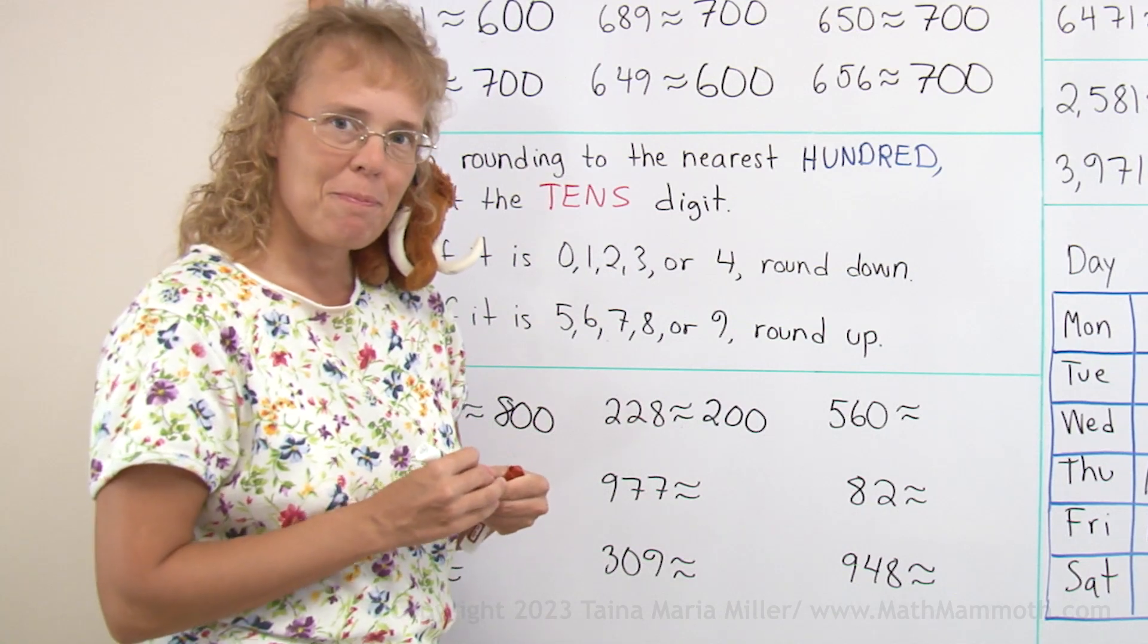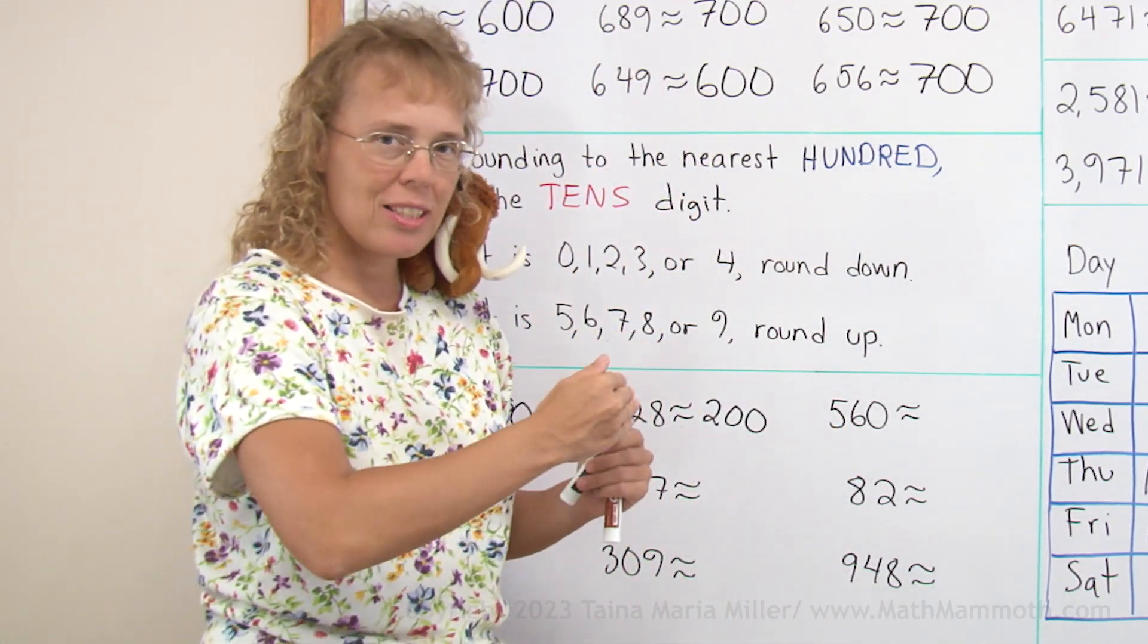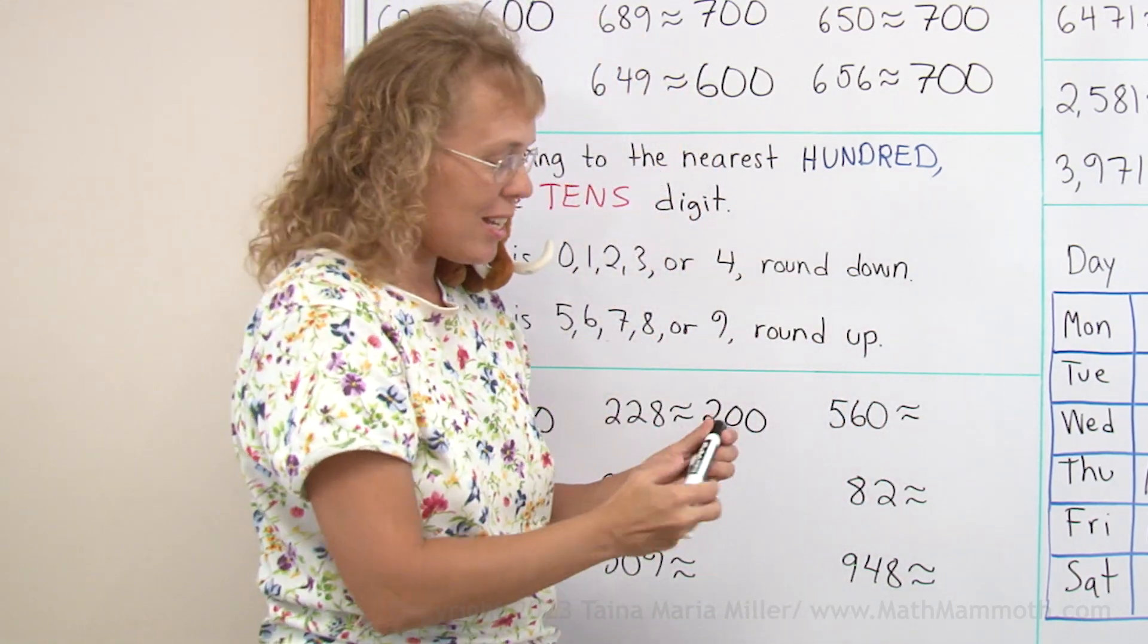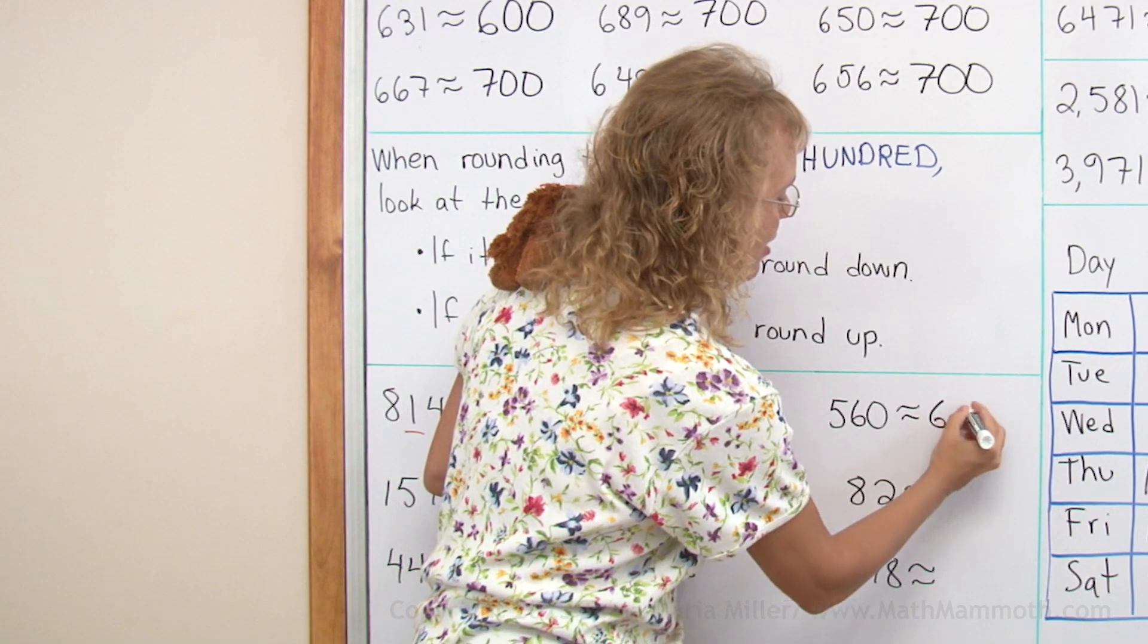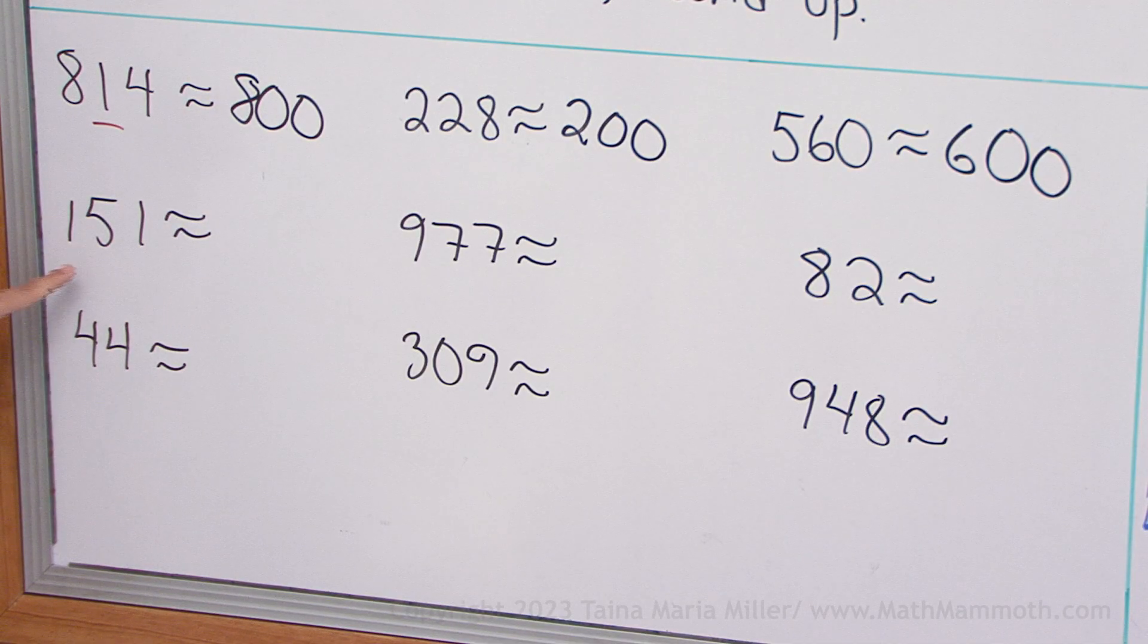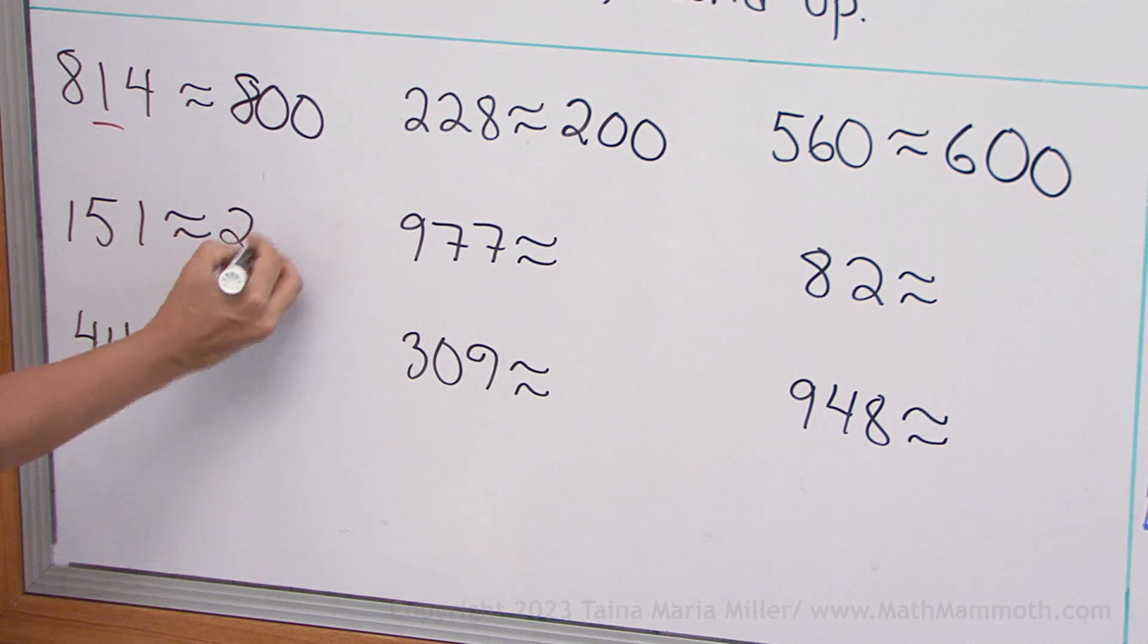560. Now, this one would be past the middle point, past the 50, 550. So it gets rounded up, right? To the next hundred, 600. And this one? There's 51. Round up. Because 50 means you round up.